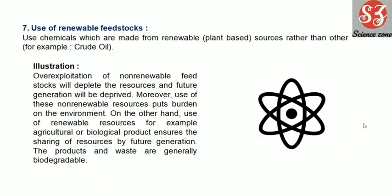The seventh principle of green chemistry is use of renewable feedstocks. So what is a renewable feedstock? Chemicals like petrol, diesel, and coal are not renewable sources. They will be finished one day, and if we don't use them properly they will be finished even more quickly.